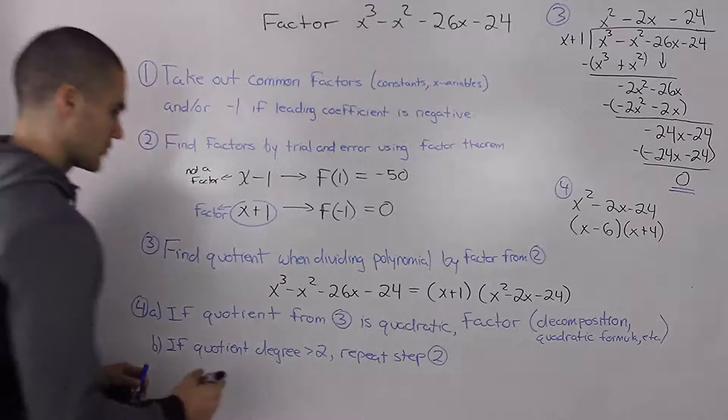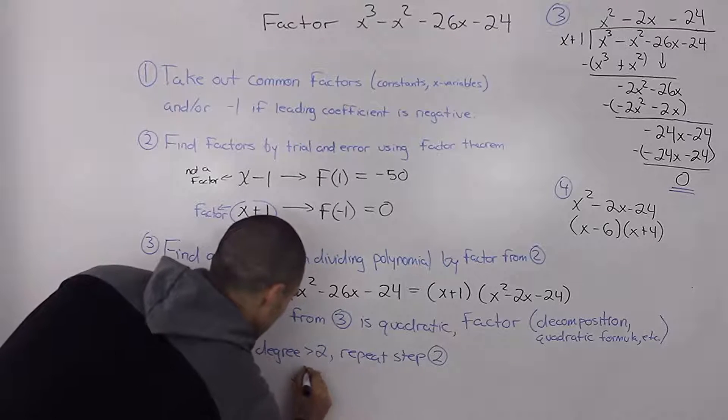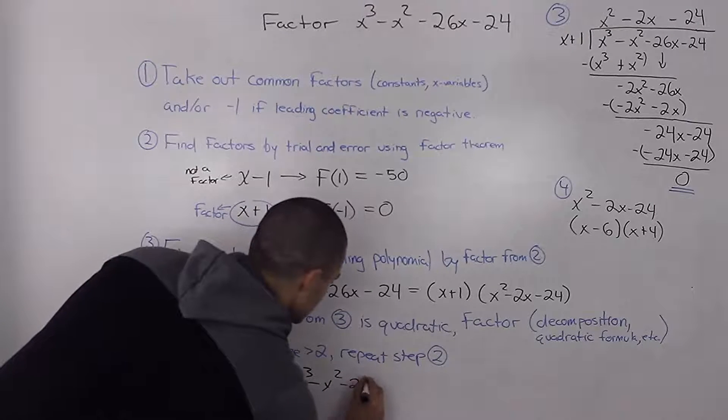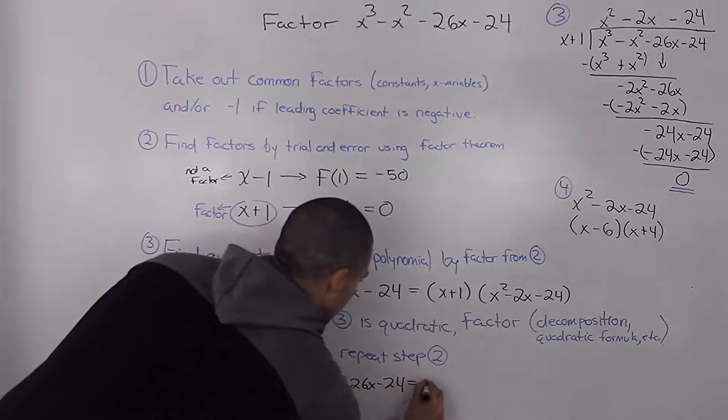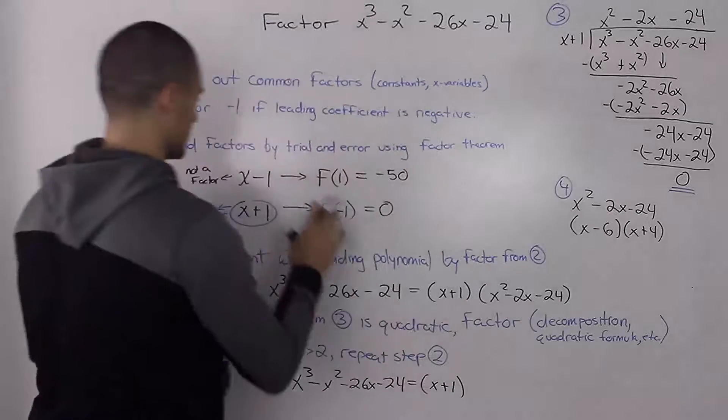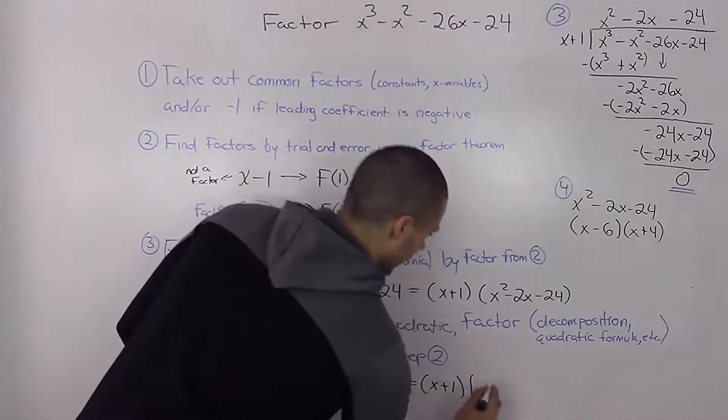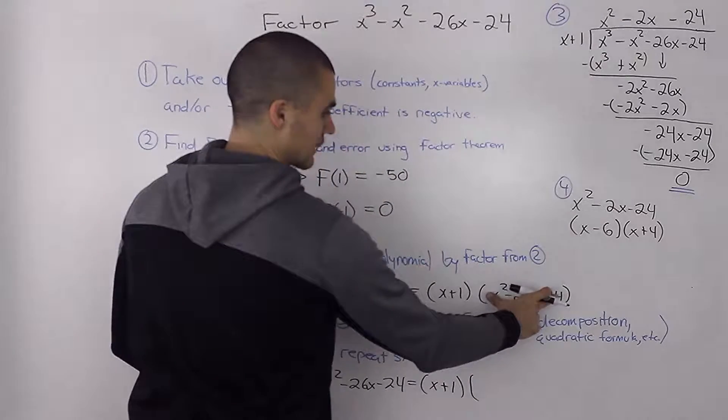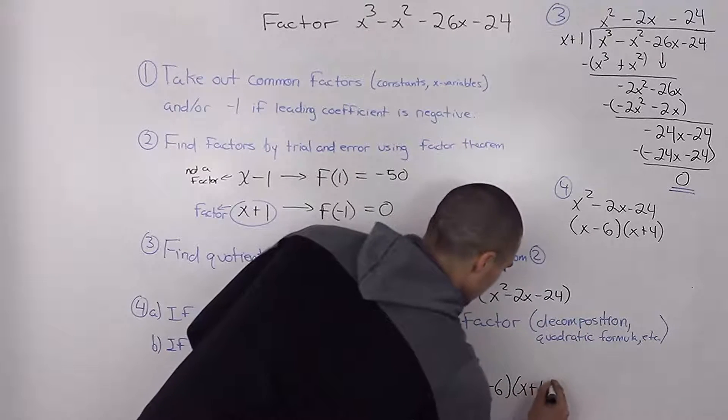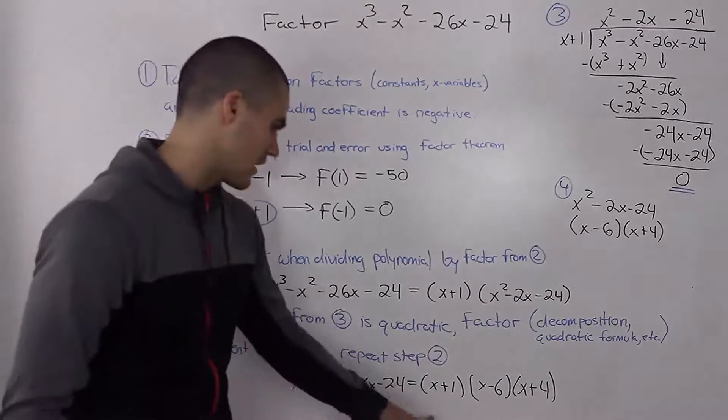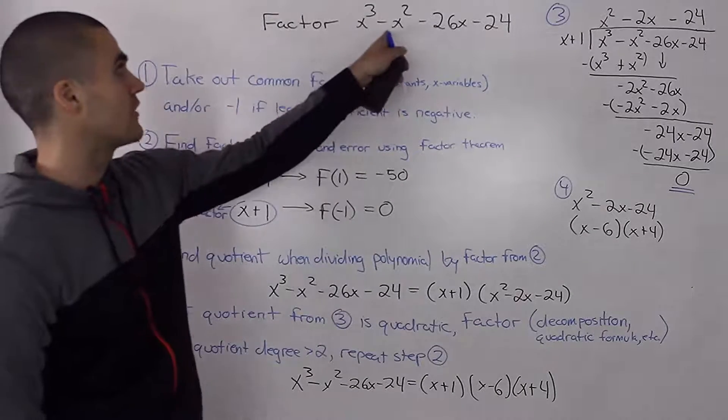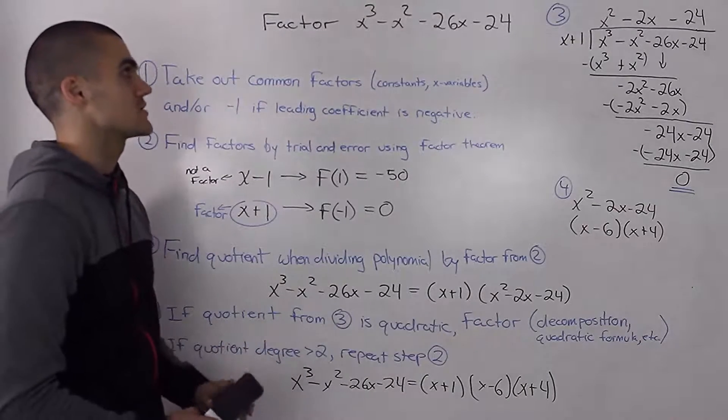So our final result ends up being, let's rewrite the dividend: x cubed minus x squared minus 26x minus 24. That's equal to our original factor that we found in step two. And then we factor this quotient here so we end up with x minus 6 times x plus 4. So this here, x plus 1 times x minus 6 times x plus 4, is the factored form of x cubed minus x squared minus 26x minus 24.